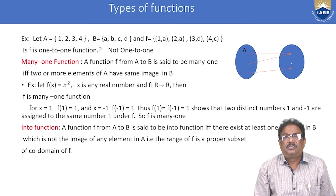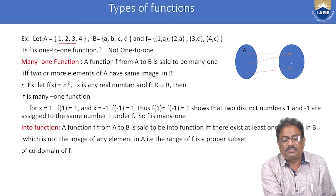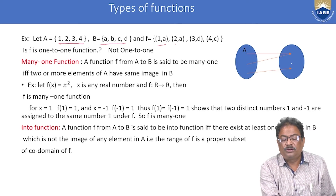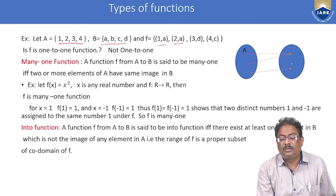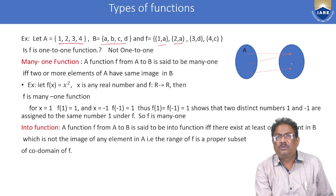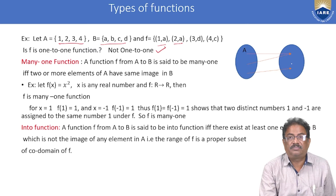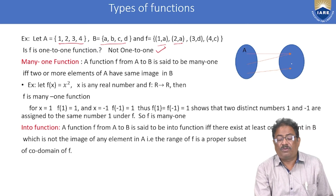In the next case, both 1 and 2 from A map to the same element a in B — meaning element a in B has more than one preimage. Since two different elements have the same image, this is not a one-to-one function.